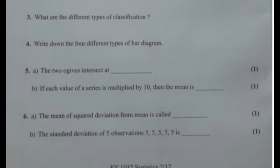Sub-divided bar diagrams are used to represent data in which the total magnitude bar is divided into different parts or components. In these types of diagrams, first make a simple bar for each class taking total magnitude in that class, and then divide these simple bars into parts in the ratio of various components.